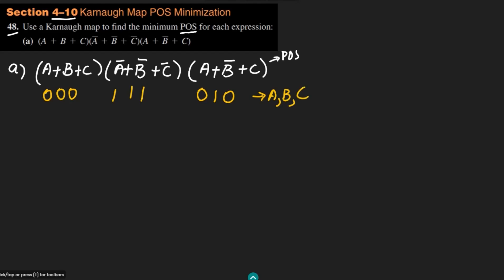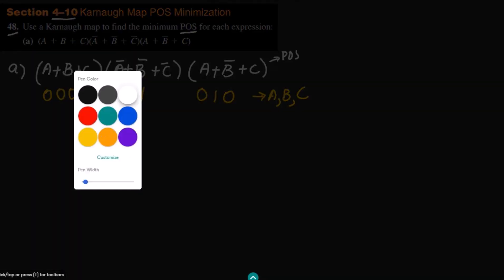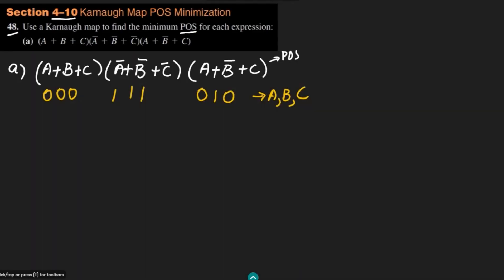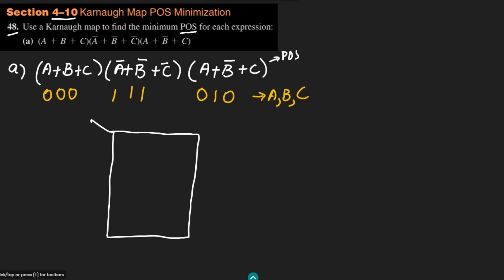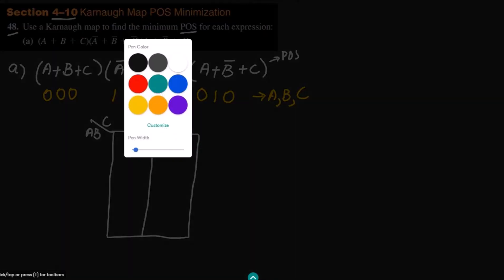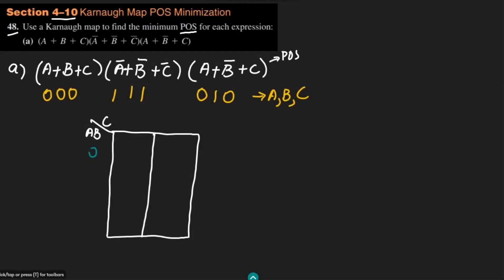After finding the binary values, I have to draw the Karnaugh map. The Karnaugh map here will be for 3 variables because the domain is composed of A, B, and C. Let me draw it here as well and write the combinations.